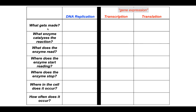With each new set of biochemical reactions, there is a series of questions you want to always ask yourself: What's the product of the reaction — what gets made? Since this is a biochemical reaction, it requires an enzyme — what's the name of that enzyme? The products are information-rich polymers, so there has to be a template. What is that source of information? Where does the enzyme start and stop reading? And where within a eukaryotic cell does this occur, and how often?